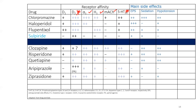Next is the serotonergic effect. Antipsychotics exert effects on the serotonin 5-HT2A receptor. Some books mention that haloperidol has no effect on the serotonergic 5-HT2A receptor, which is a point of contention and can be debated.